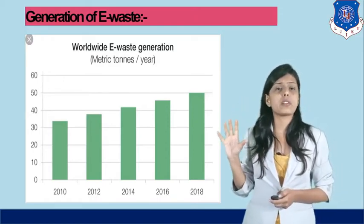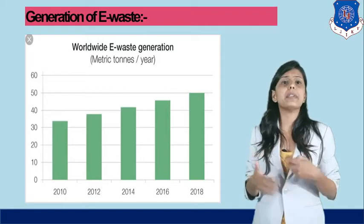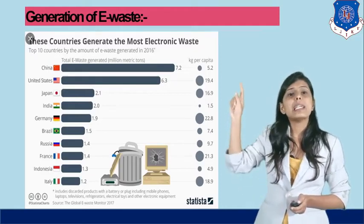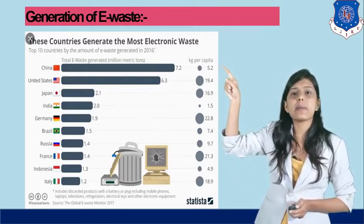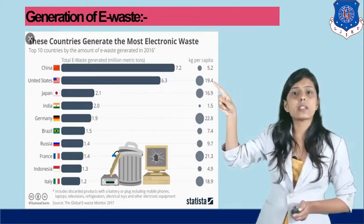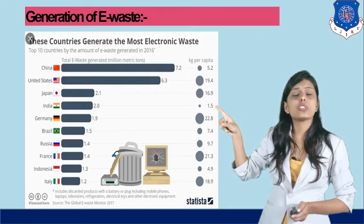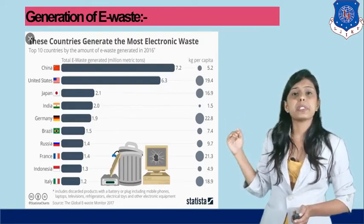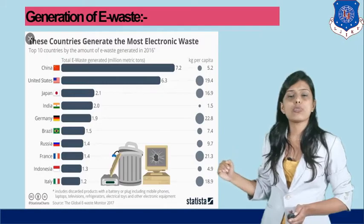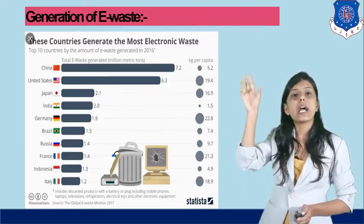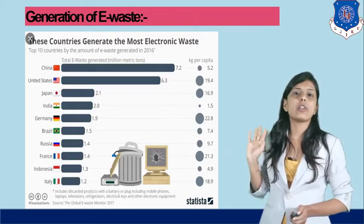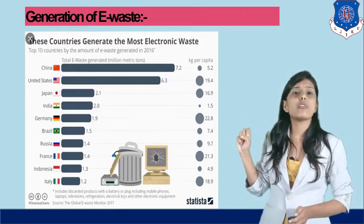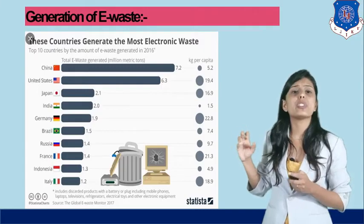This much amount of electronic waste in metric tons is emitted year by year. Which countries are generating the maximum amount? The highest amount is generated by China, then the United States, then Japan, then India — which is on fourth number. After that: Germany, Brazil, Russia, France, Indonesia, and Italy. These are the top 10 countries generating electronic waste, and we should be concerned about how to control and manage it.